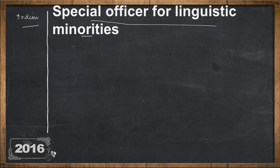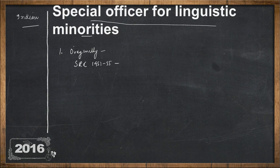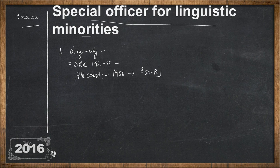There are a few points to look at from the beginning. Originally, there was no such position in the constitution — no office or provision with respect to the officer for linguistic minorities. But later, the State Reorganization Commission of 1953-55 decided that there should be a separate office and commissioner for linguistic minorities. Accordingly, the 7th Constitutional Amendment Act of 1956 inserted a new article, Article 350B, into the constitution.